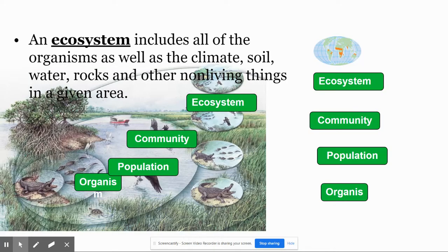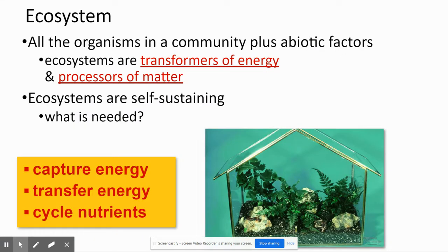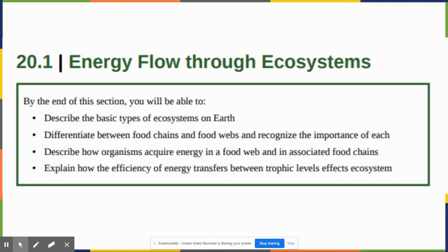Just to review: an ecosystem includes all living and non-living things — biotic and abiotic. Ecosystems do three things: they capture energy through photosynthesis, taking CO2 from the atmosphere and water from the ground to make sugar; they transfer that energy through the food web using the 10% rule and trophic levels; and they cycle nutrients through geochemical cycles. The first matter made is sugar, and then other things are made from that.